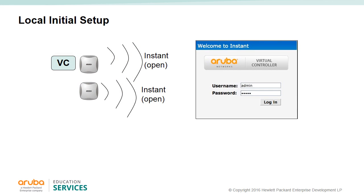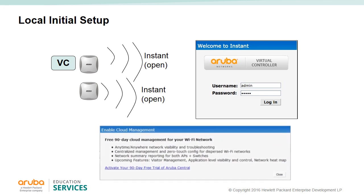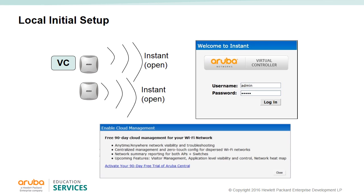For local deployments, the IAPs will broadcast an open SSID. A client simply connects to the instant SSID of any IAP in the cluster and will be redirected to the master AP website. Once connected, the client can log in using the default credentials admin/admin. A pop-up window will appear offering a free 90-day trial to the Aruba Central cloud-based management system.